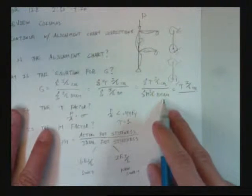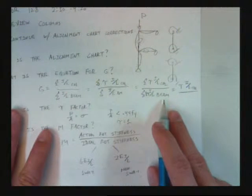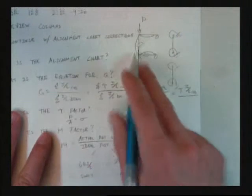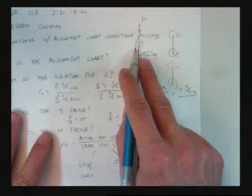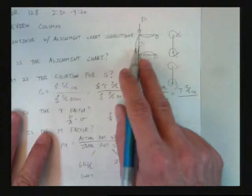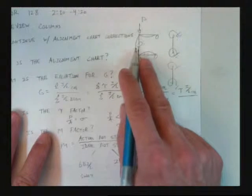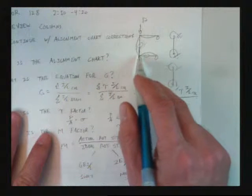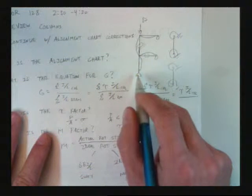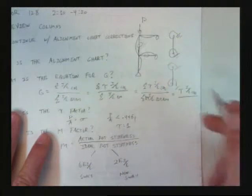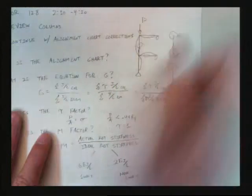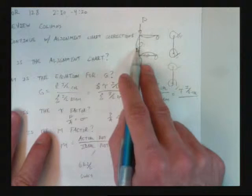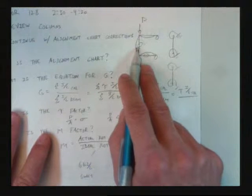And what do the other members try to do? Stop it. So, for example, let's just assume the bottom member is the column. Okay? So that means it wants to buckle. That means this member is going to try to help it. Right? And that means this member is going to try to help it, isn't it?